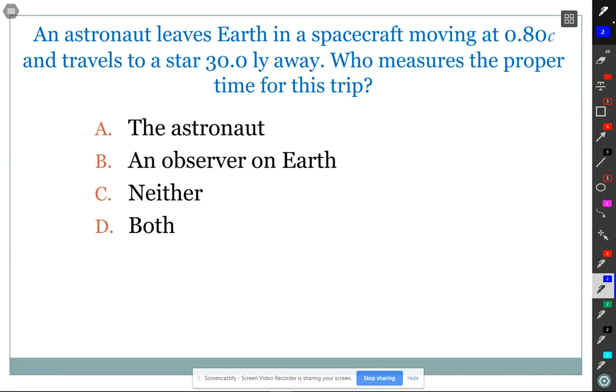So I have three questions for you. An astronaut leaves Earth in a spacecraft moving at 0.80C with respect to Earth and travels to a star 30 light years away. Who measures the proper time for the trip? Is it the astronaut, an observer on Earth, or neither or both? Assuming that they did it correctly.